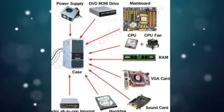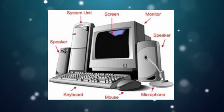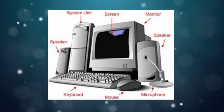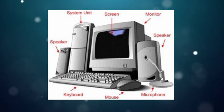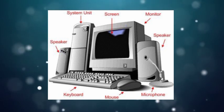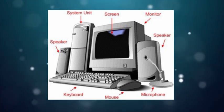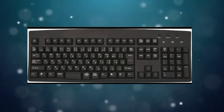First we'll look at external hardware devices. As shown in your book with a figure, external devices include monitor, keyboard, mouse, microphone, scanner, printer, modem, speaker, and pen drive. We'll discuss each briefly. What is a keyboard? You already know that keyboard is an input device used to give instructions or information to the computer. We can type on it, and it looks like a typewriter.